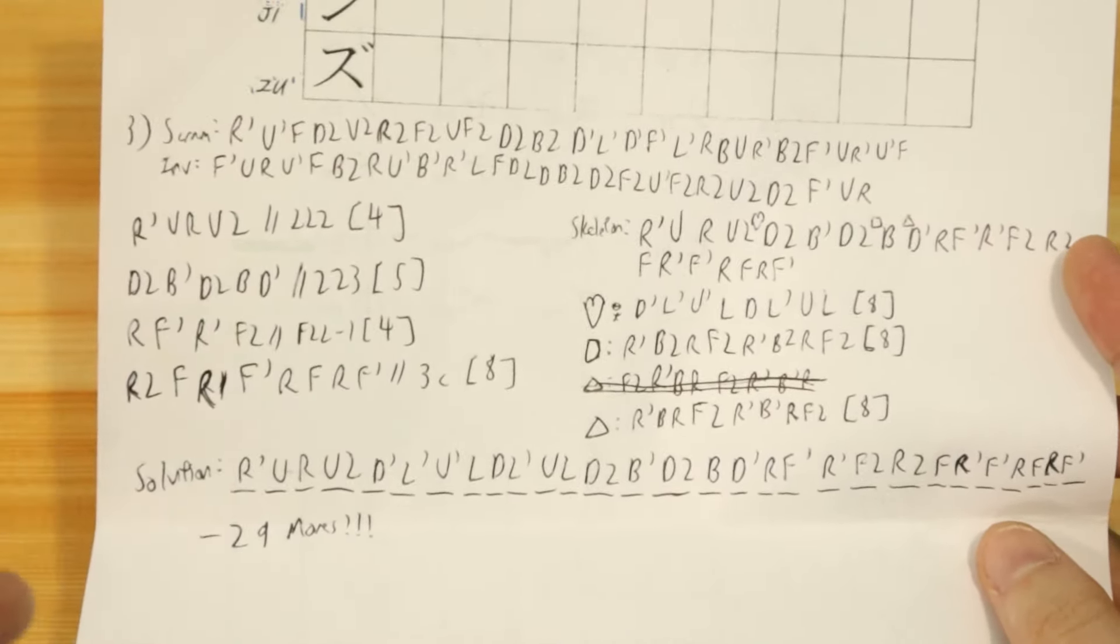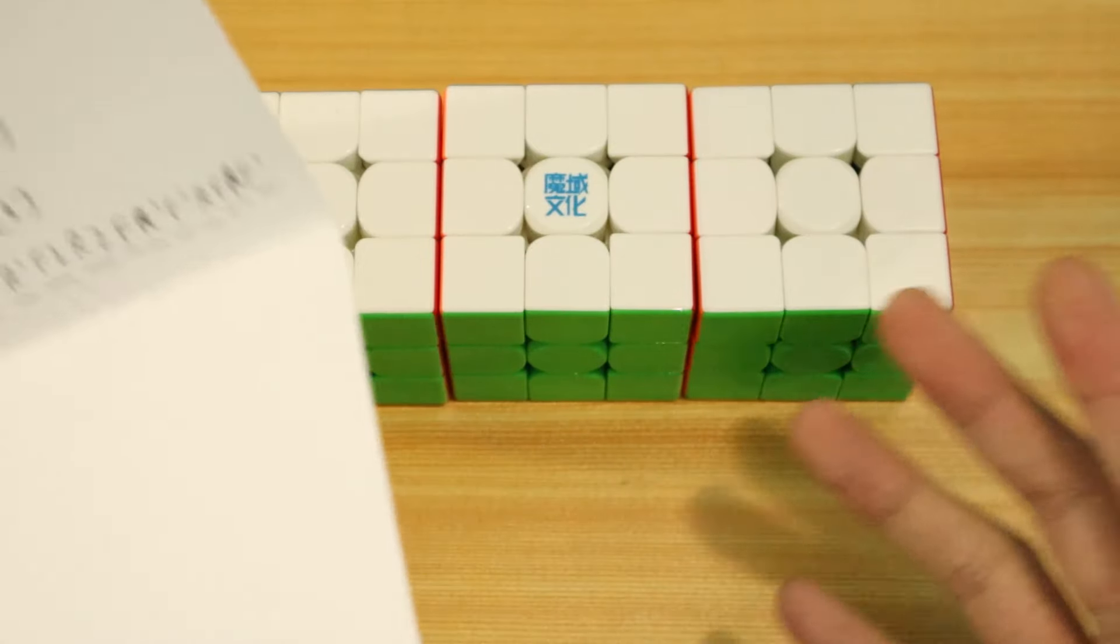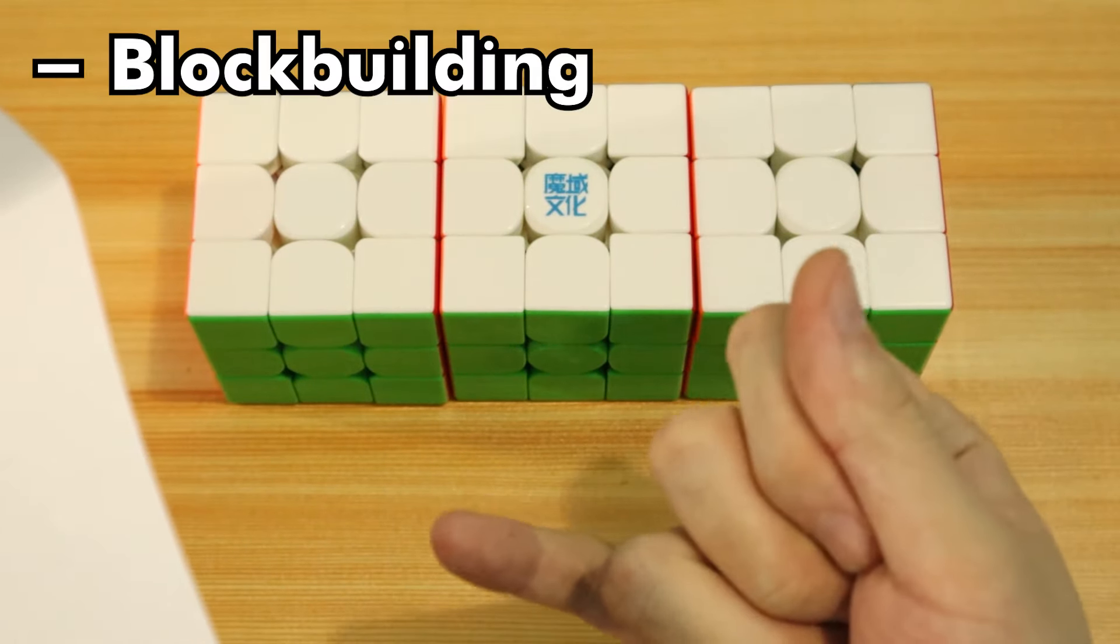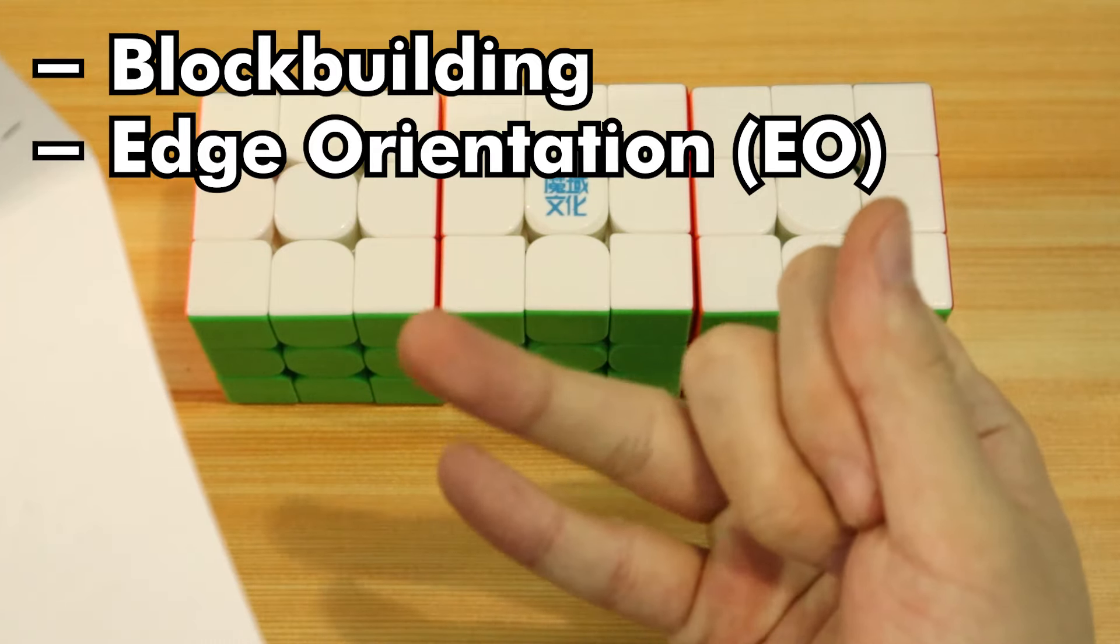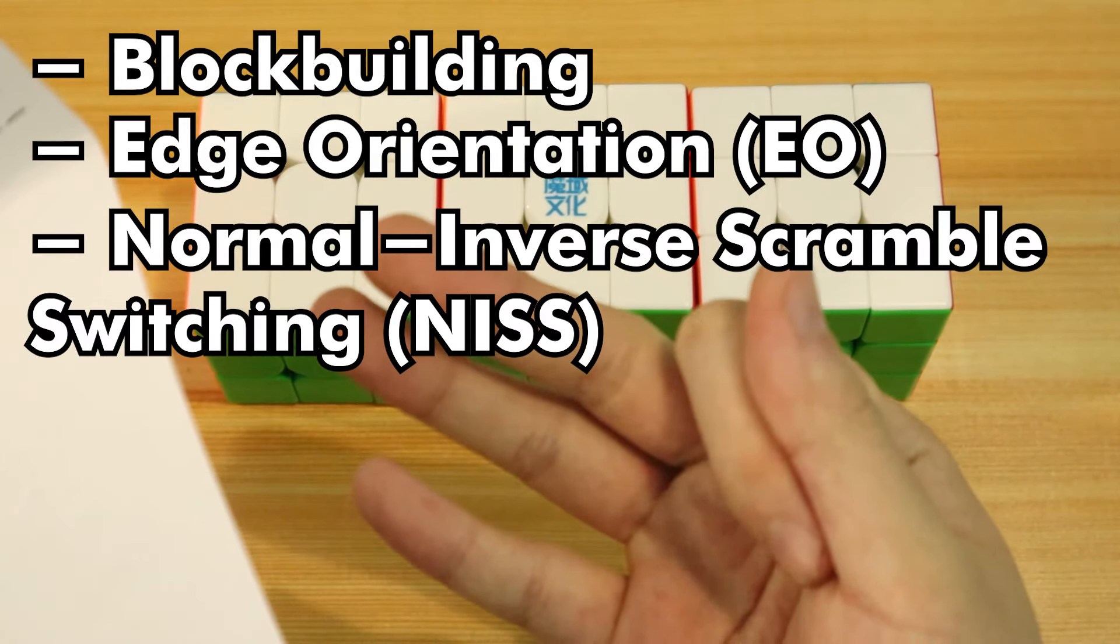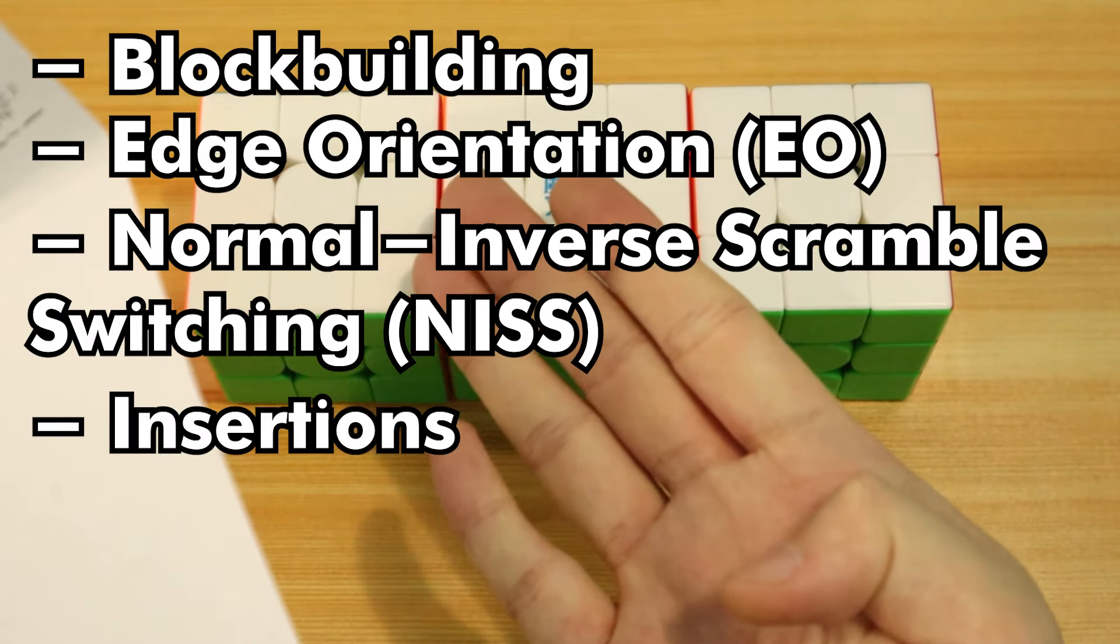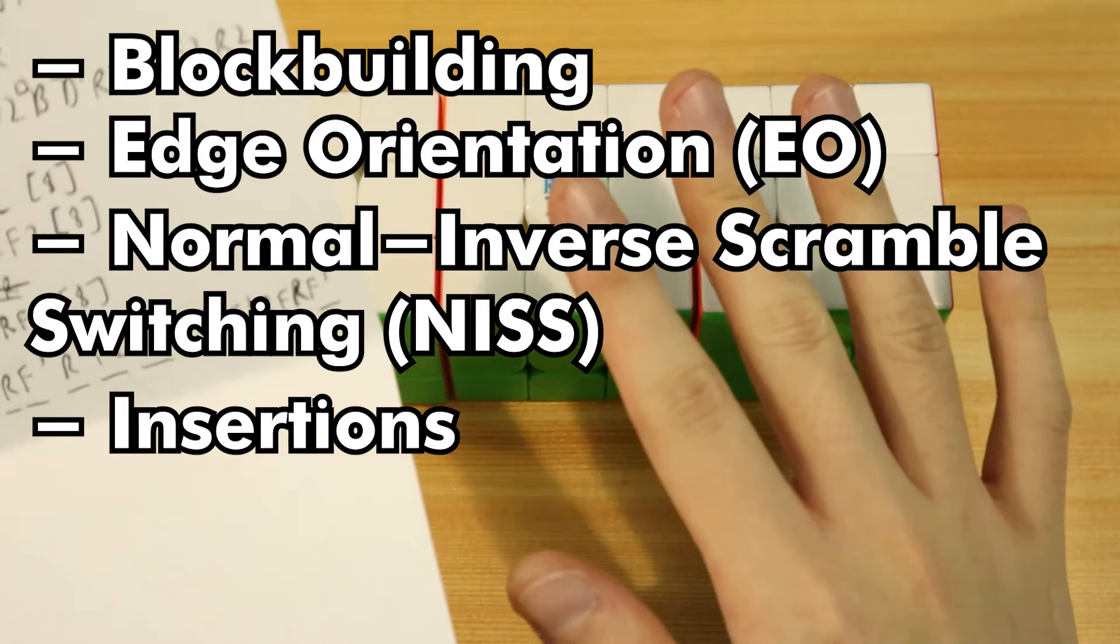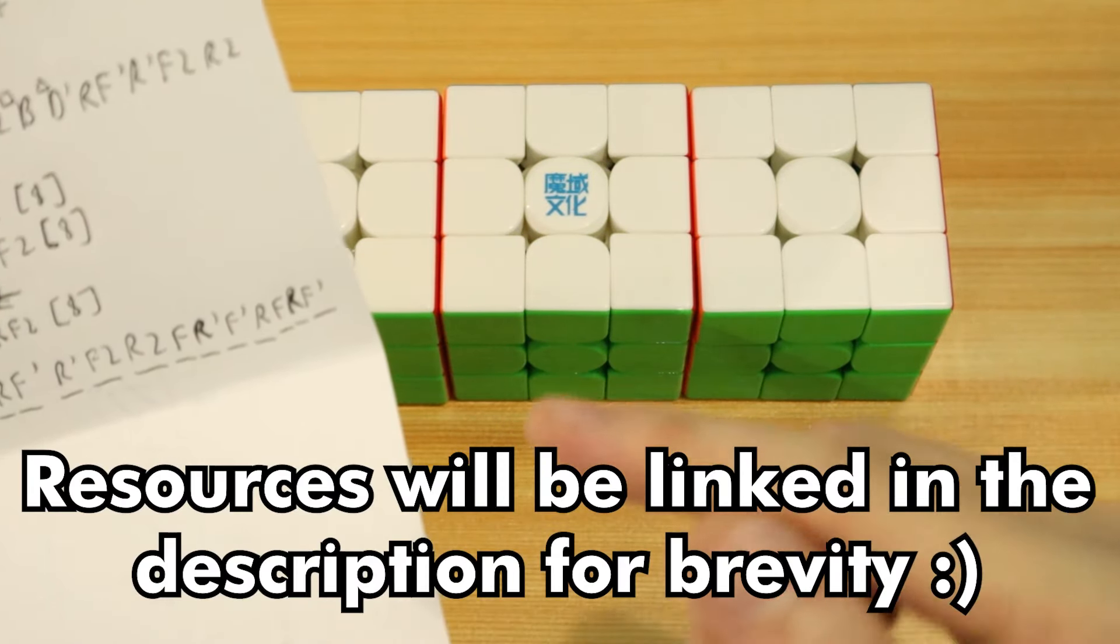Now I got this at a time when I was learning insertions, because for my current skill set I use block building, edge orientation (EO), NIS (normal inverse scramble switching), and insertions, which is using commutators to cancel out moves and to solve remaining pieces.